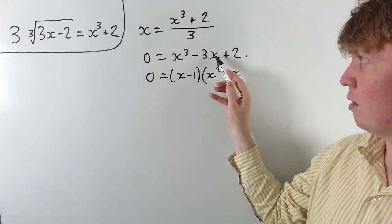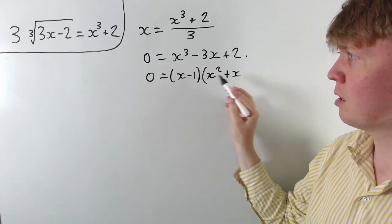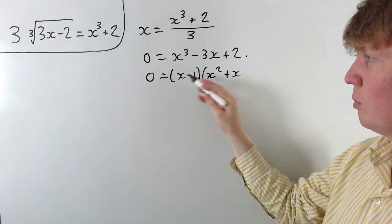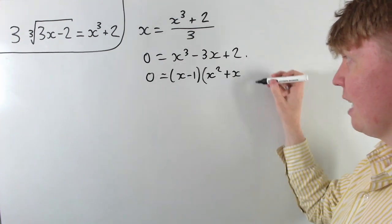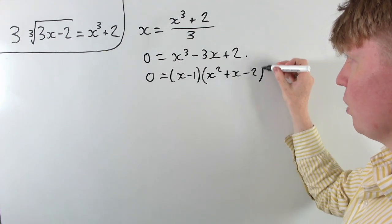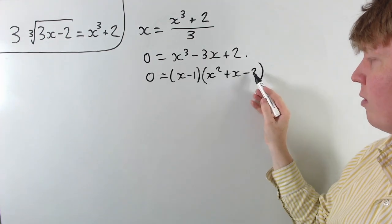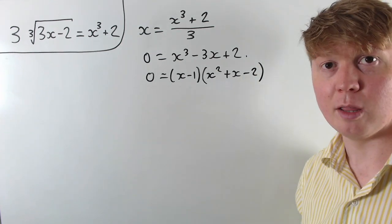And then to get negative 3x, at the moment we've got negative 1 times x, so we need another negative 2 to multiply by this x to make negative 3x, so take away 2 like this, and you can see that the minus 1 and the minus 2 multiply to make the positive 2.